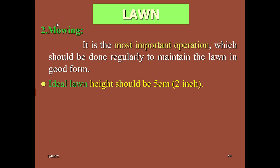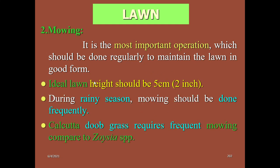Mowing is also one of the important operations that should be done regularly to maintain the lawn in good form. Mowing helps maintain the height of the lawn. The ideal height should be five to six centimeters or exactly five centimeters. The general thumb rule for mowing is we should cut off one-third of the height of the lawn.